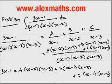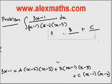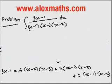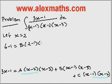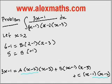I have to select some value for x to find the values of A, B, and C. Let x equal to 2. This will become 6 minus 1. The first term becomes 0 because there is A into x minus 2, and the last term also becomes 0. So we have only B into 2 minus 1 into 2 minus 3, giving 5 equals B into 1 into minus 1, so B equals minus 5.